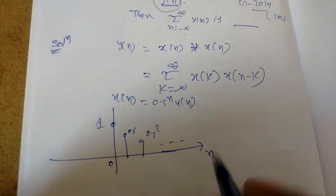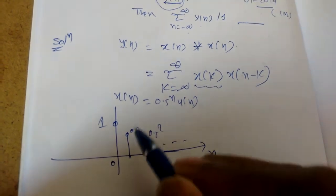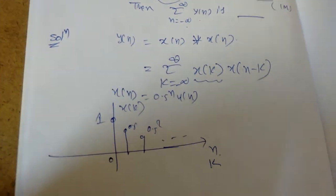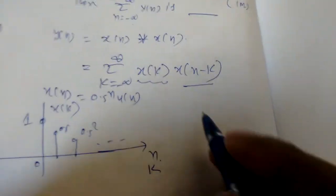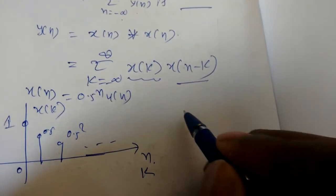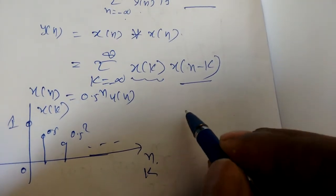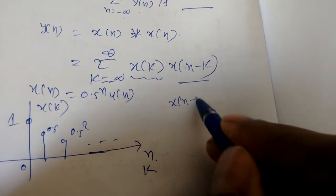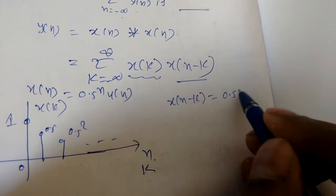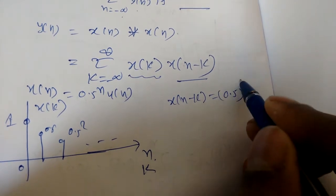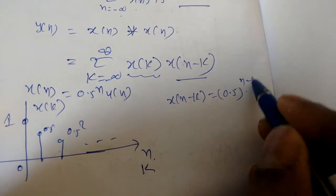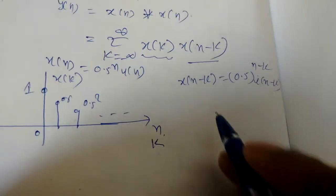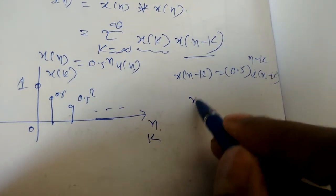We have to change the domain. x(k) is obtained by replacing n with k. Next we need to find x(n-k), which means in place of n we substitute (n-k), giving x(n-k) = (0.5)^(n-k) * u(n-k). This is straightforward to derive.